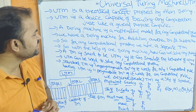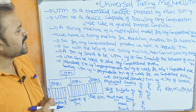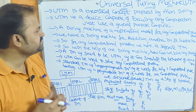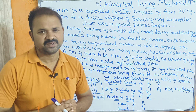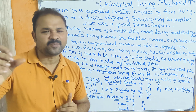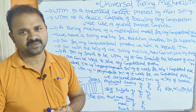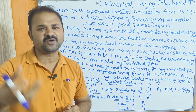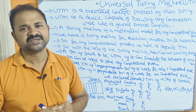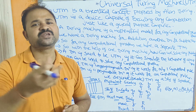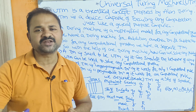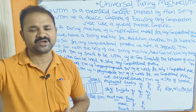Universal Turing Machine is a device capable of executing any computation, just like a general purpose computer. It can perform any operation that a computer performs. Suppose if the computer performs 10 operations, then all 10 operations will be performed by the Universal Turing Machine. So its capability is similar to a normal general purpose computer.